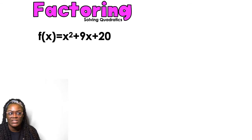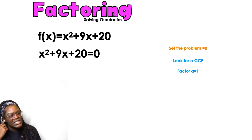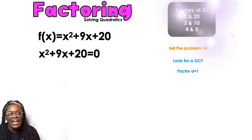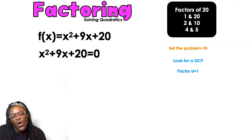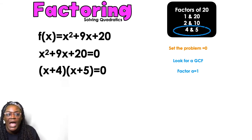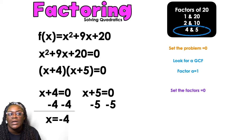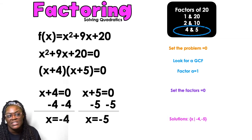Example two: f(x) = x² + 9x + 20. Set equal to zero. No GCF. Since a = 1, just find factors of 20 that add to 9: 1×20, 2×10, 4×5 — four and five work. So (x + 4)(x + 5) = 0. Setting each factor equal to zero: x + 4 = 0 and x + 5 = 0, giving x = -4 and x = -5.